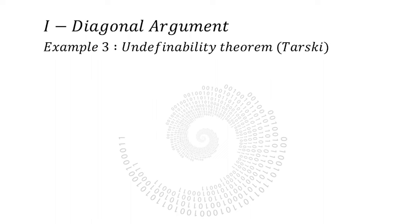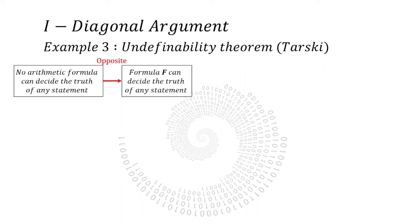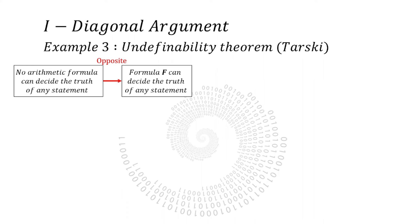The undefinability theorem of Tarski. This theorem states that no arithmetic formula can decide the truth value of any arithmetic statement. As usual, we suppose here that such formula F exists. We are dealing with arithmetic statements, which are first order logic formulas. So this is a sequence of finite alphabet. It is then countable. We can map an index to every arithmetic statement.